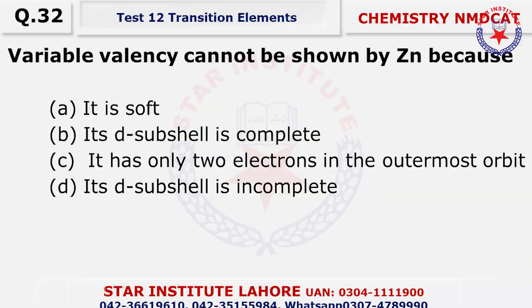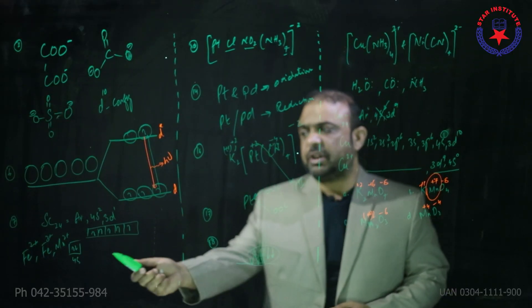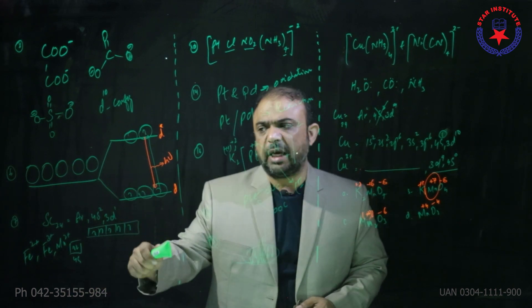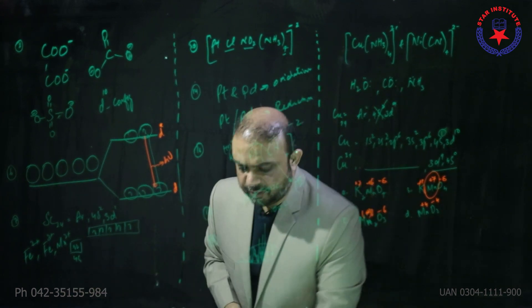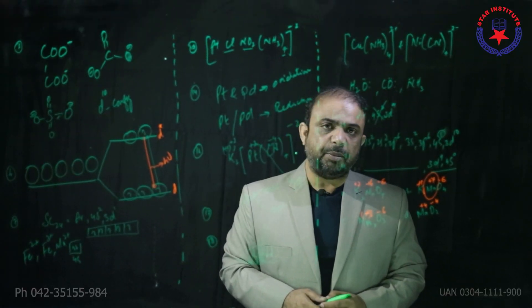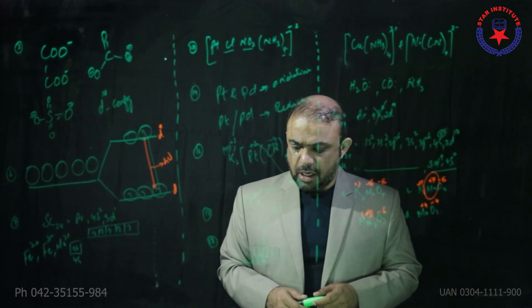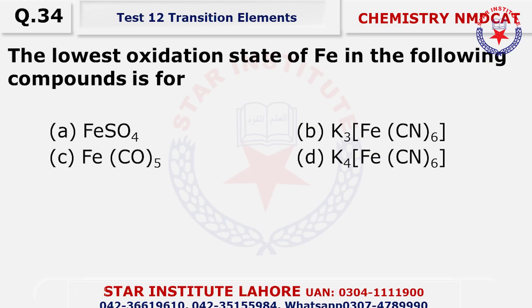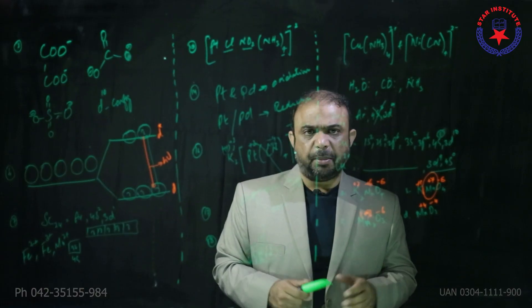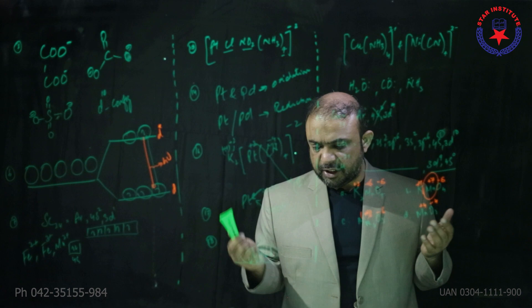Question thirty-two: variable valency is shown by transition metals because the D sub-shell is incomplete — electrons can excite and move, and this gives variable valency. Question thirty-three: when transition metal atoms are replaced by another metallic lattice, they form a substitutional alloy — choice B. Question thirty-four: the lowest oxidation state of iron in the following compound — where iron is bonded with a neutral ligand, the oxidation state will be zero, and that is mentioned in choice charlie.